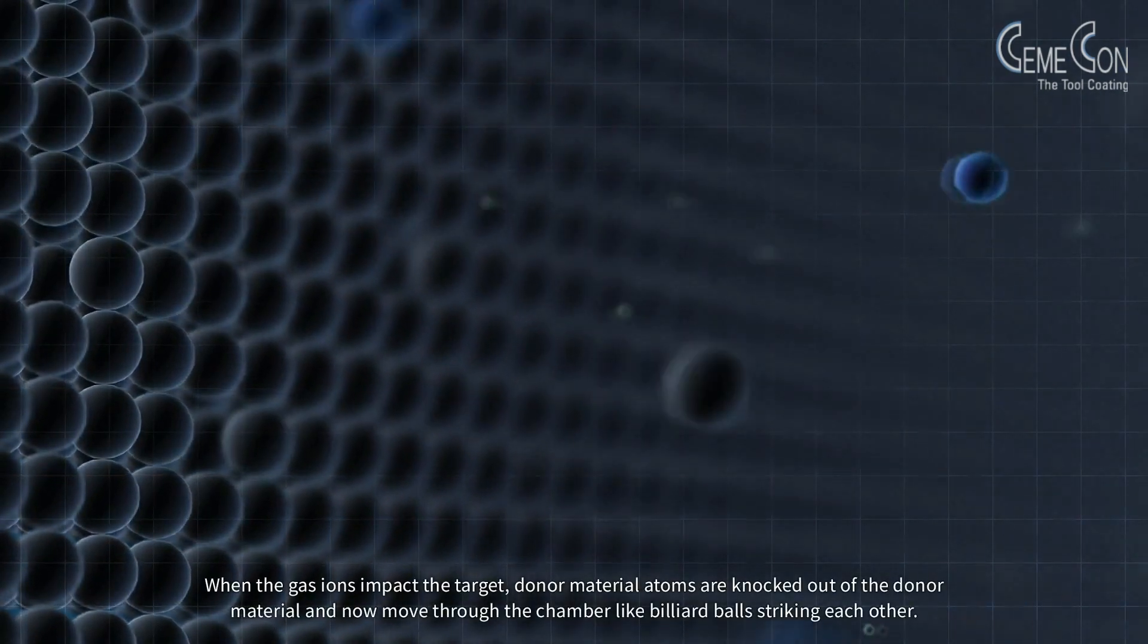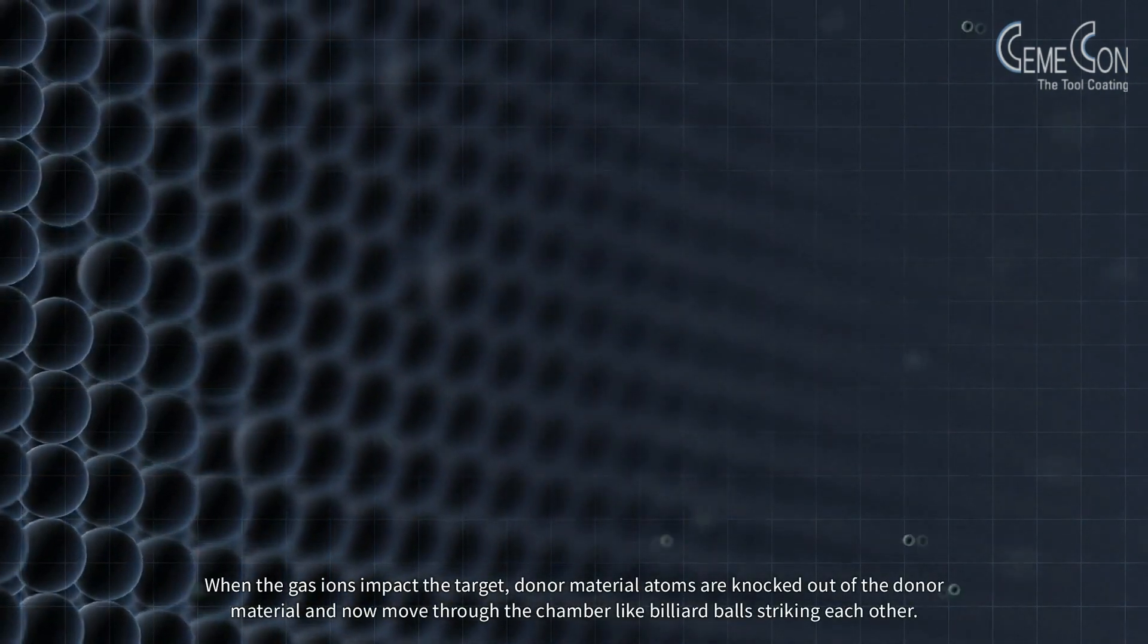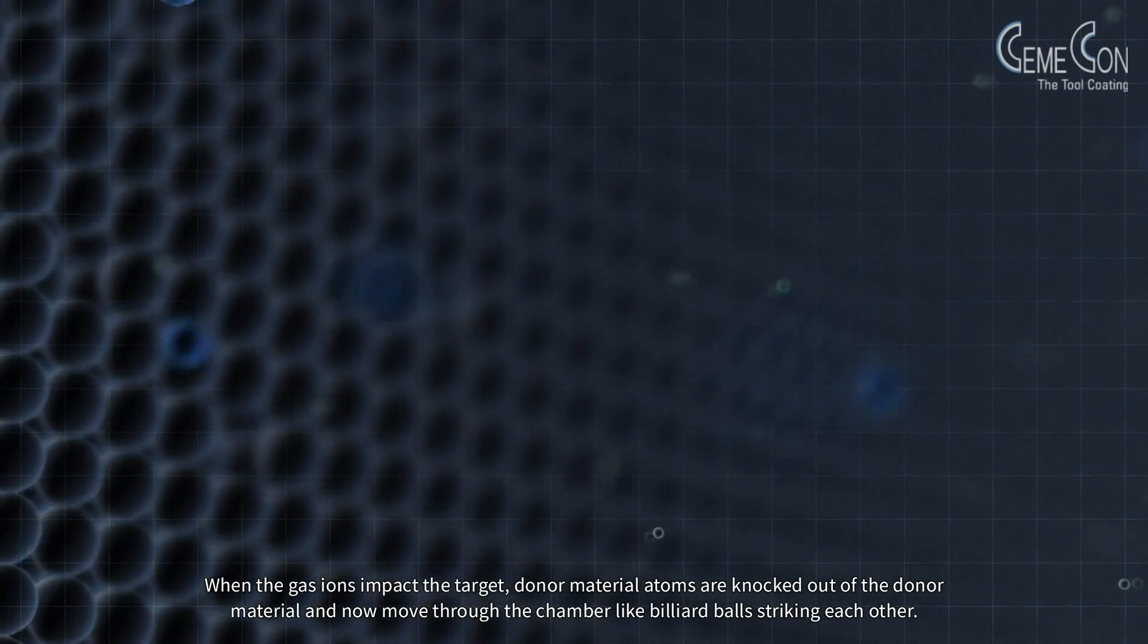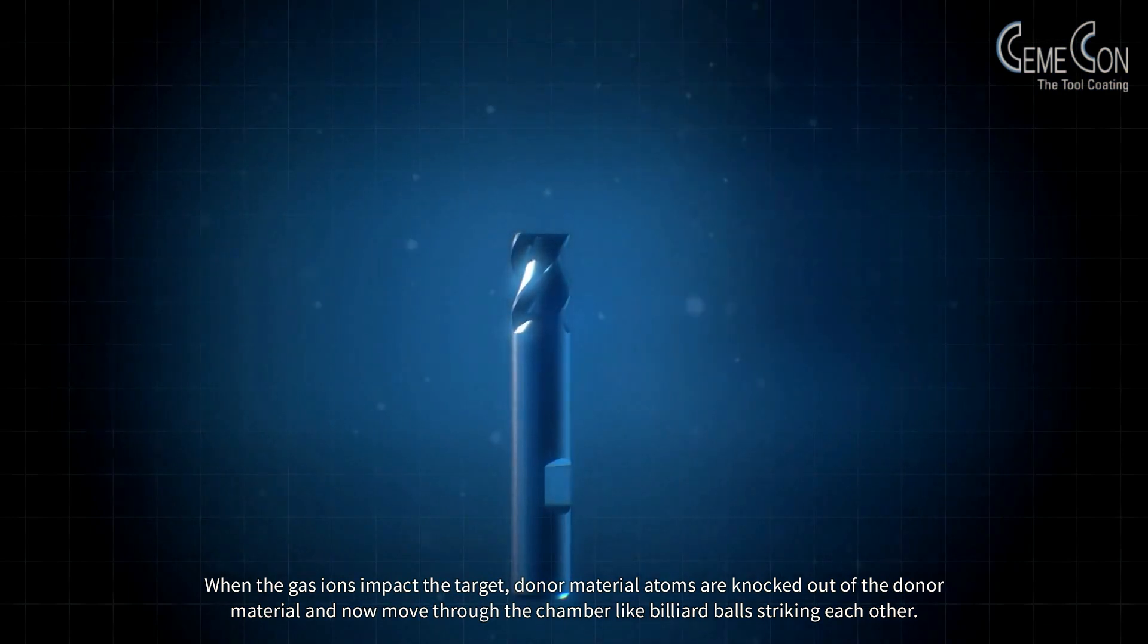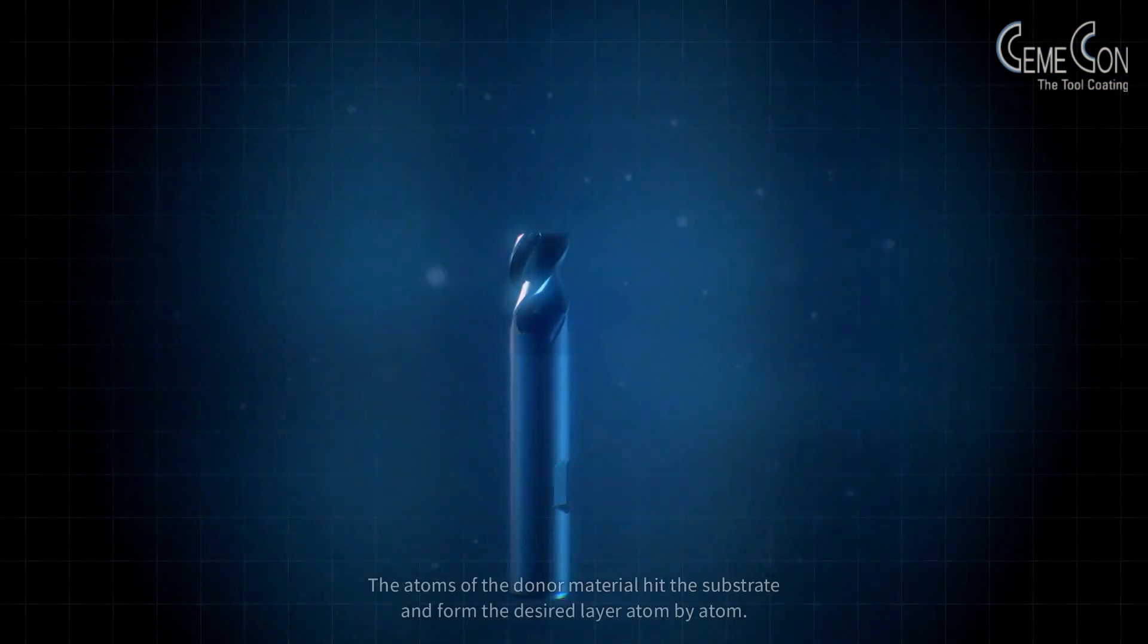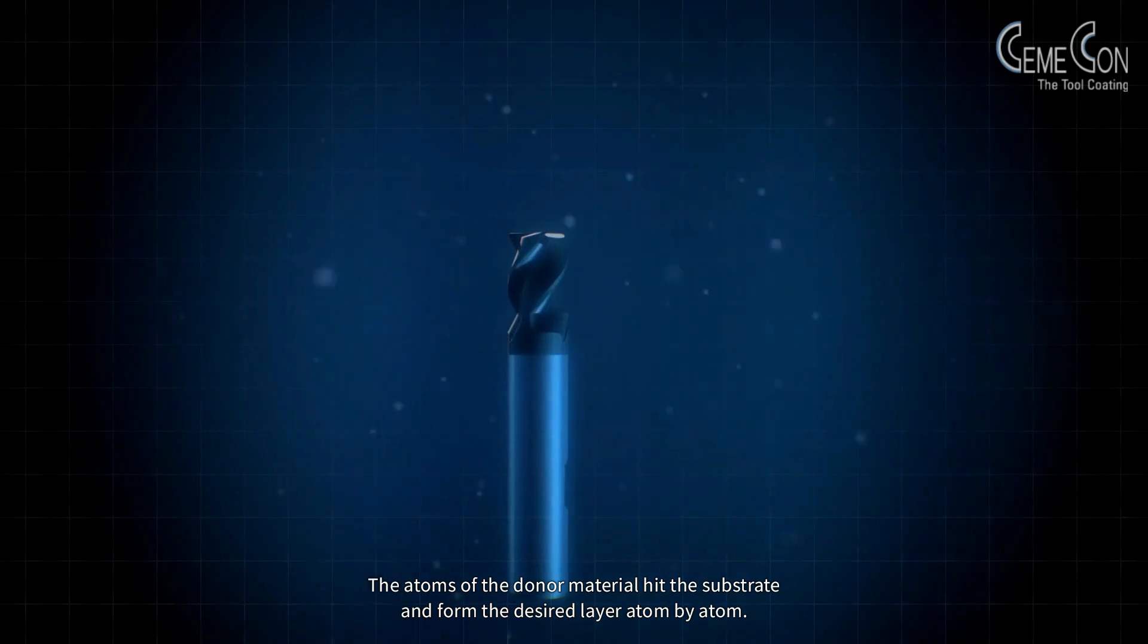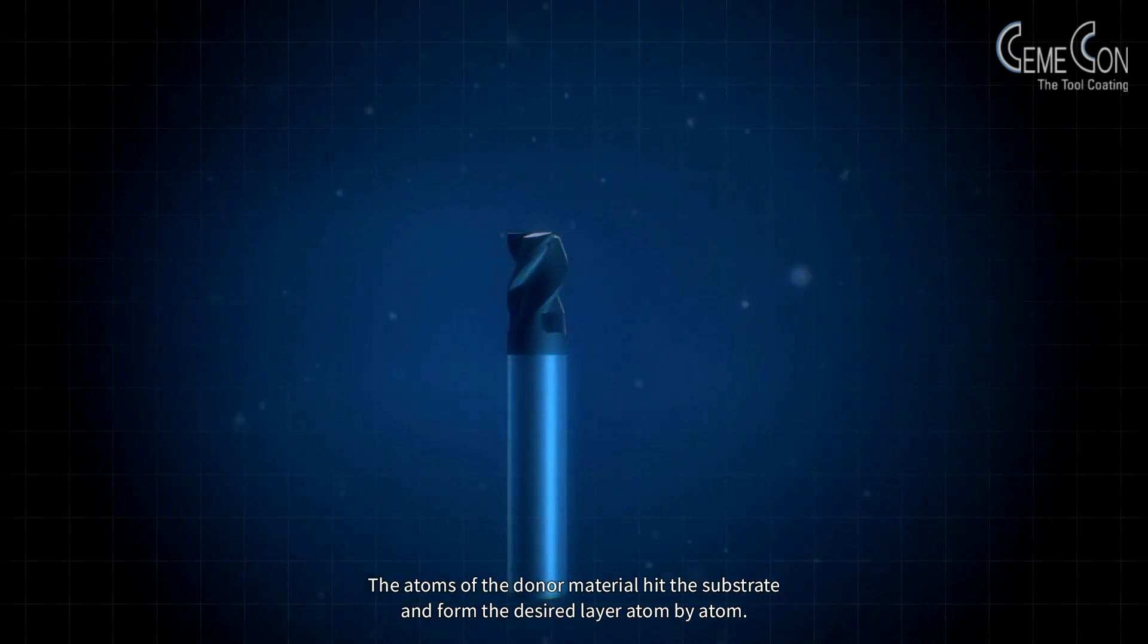When the gas ions impact the target, donor material atoms are knocked out of the donor material and now move through the chamber like billiard balls striking each other. The atoms of the donor material hit the substrate and form the desired layer atom by atom.